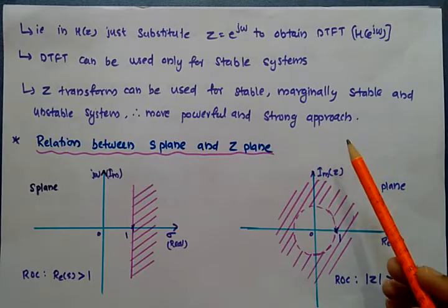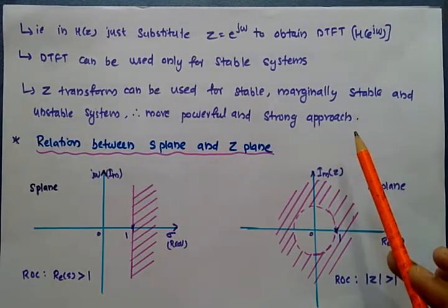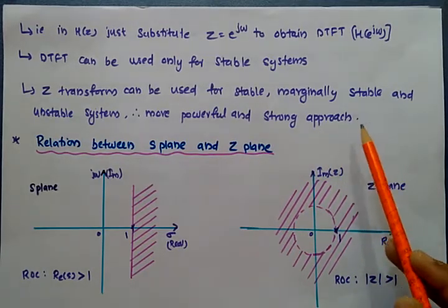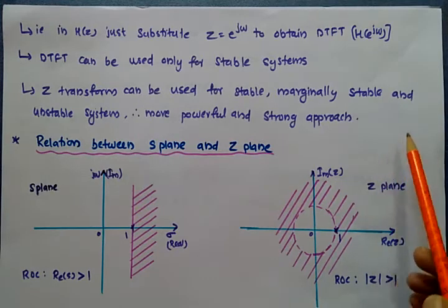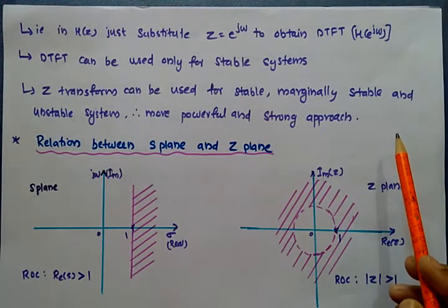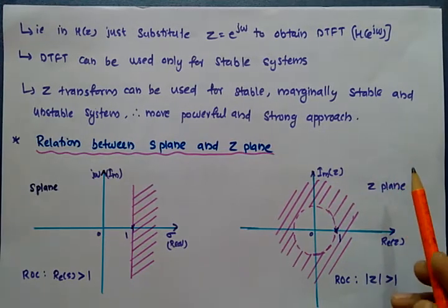The DTFT can be used only for stable systems, but the Z-transform can be used for stable, marginally stable, and unstable systems. Therefore, the Z-transform is more powerful and a stronger approach.